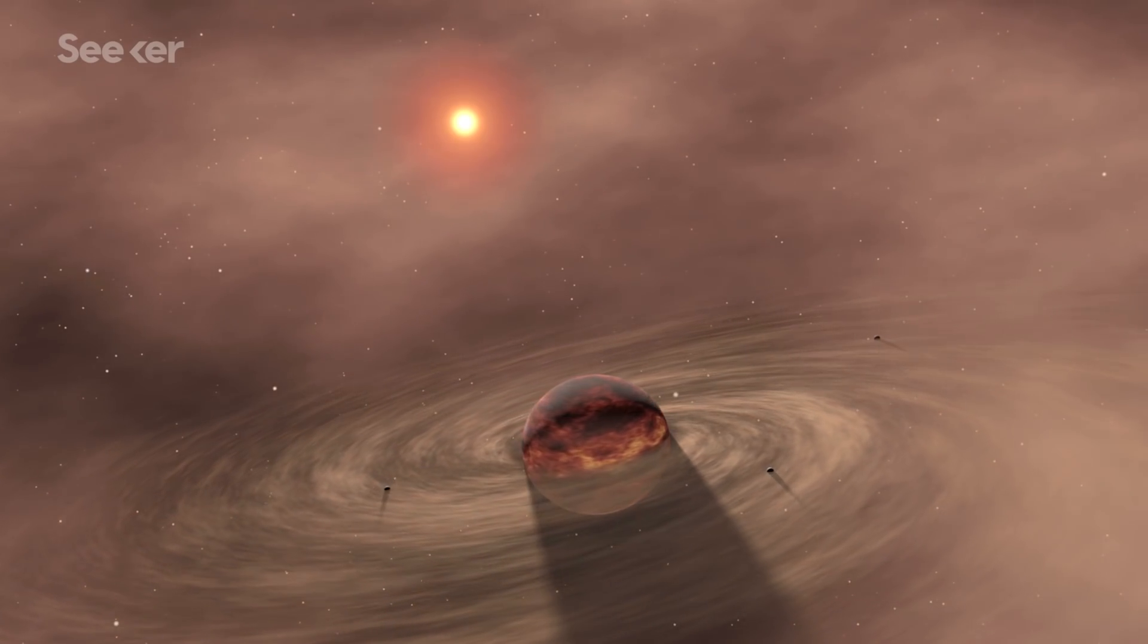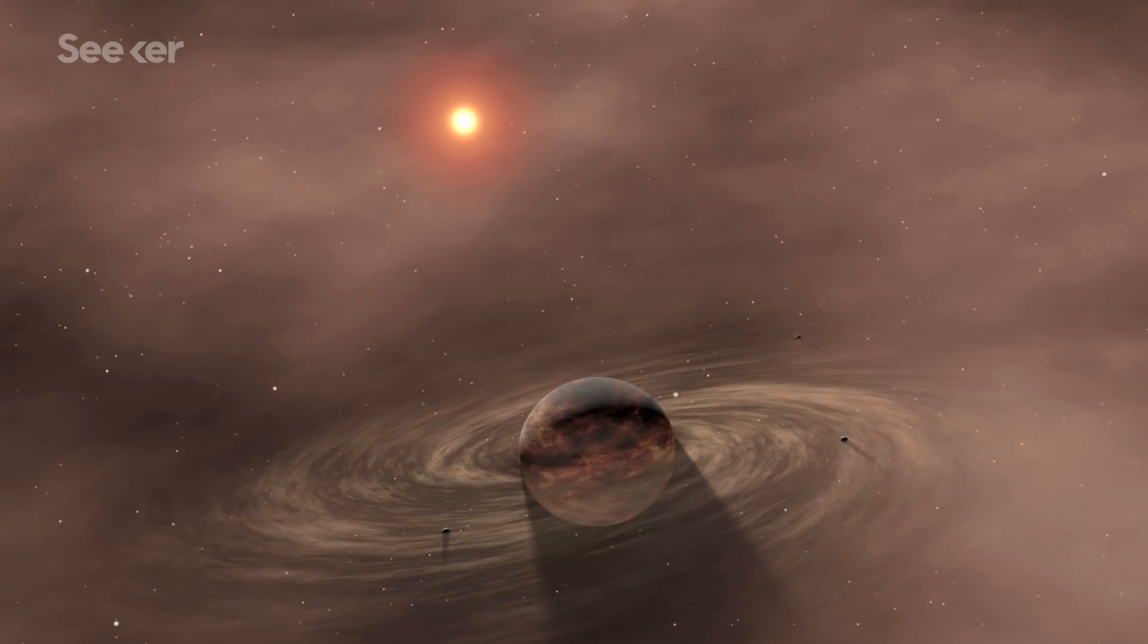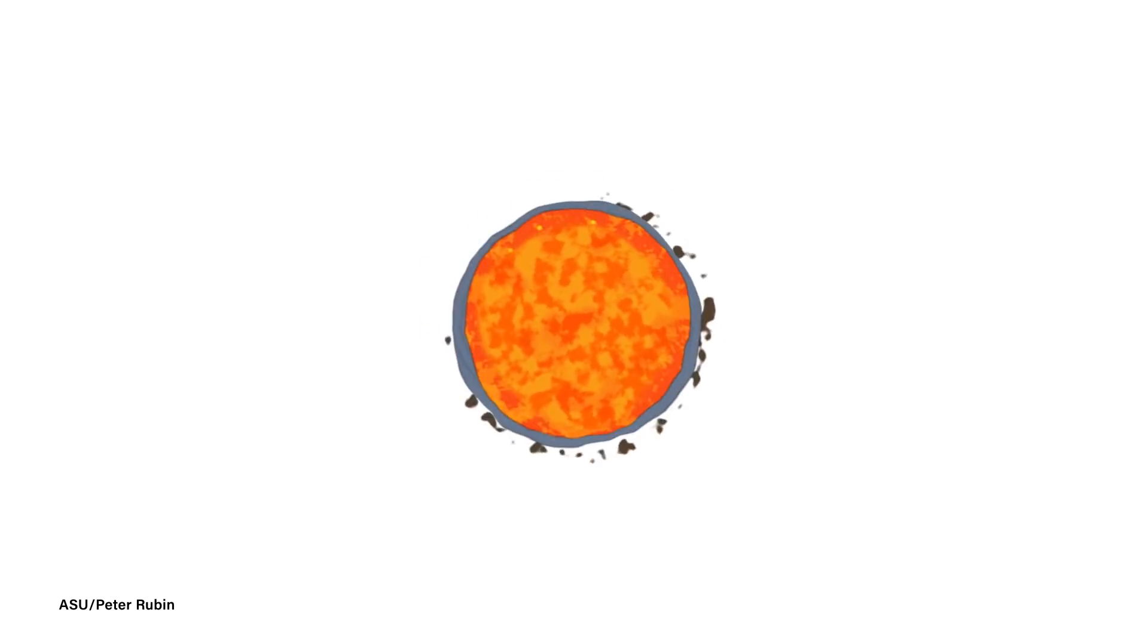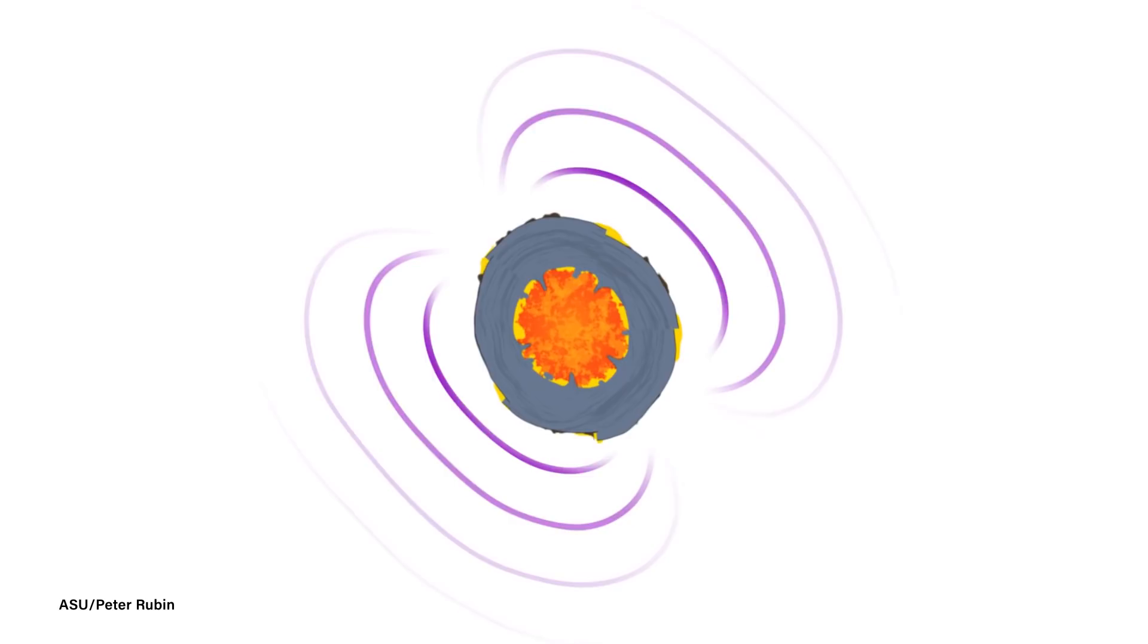Researchers suspect the asteroid is an exposed core of a protoplanet, which is a planet in its early formation stages. It's most likely that Psyche lost its rocky exterior during violent collisions in the beginning of our solar system's evolution. At least, that's what scientists' best assumptions are.